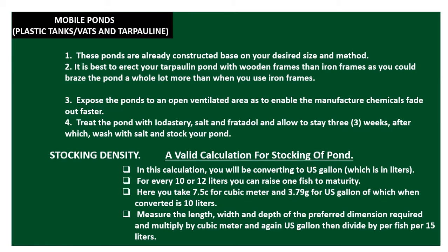Whether you want to construct a tarpaulin pond, do an earthen pond, or get a ready-made plastic vat, you first take measurements of the available space to know the quantity or size of ponds to place on the space. Measure the length, width, and depth of the preferred dimension, multiply by cubic meter conversion and US gallon, then divide by 15 liters per fish.